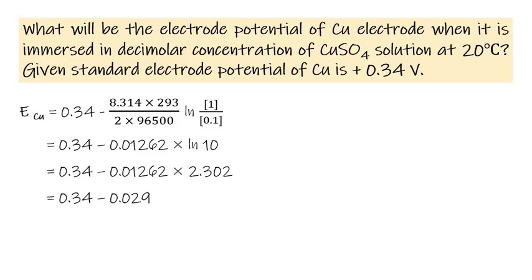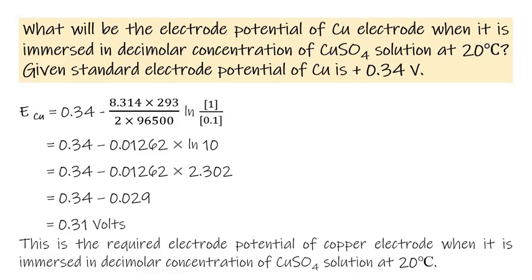Finally we get 0.31 volts. This is the required electrode potential of copper electrode when it is immersed in decimolar concentration of CuSO₄ solution at 20°C.